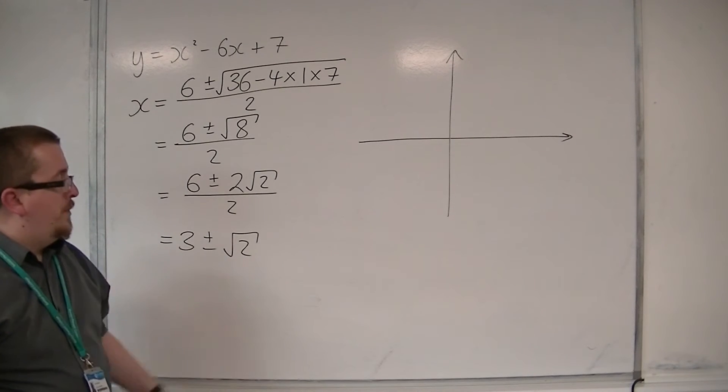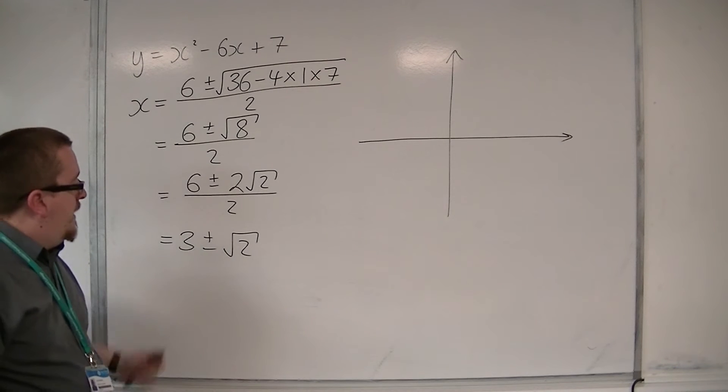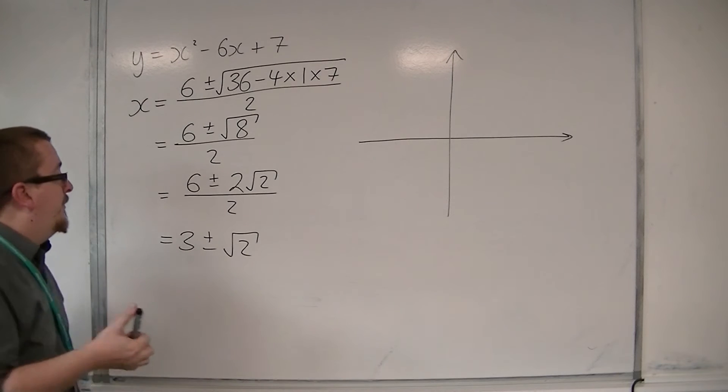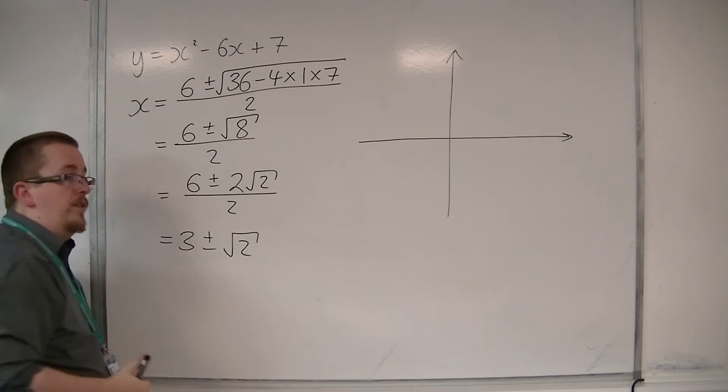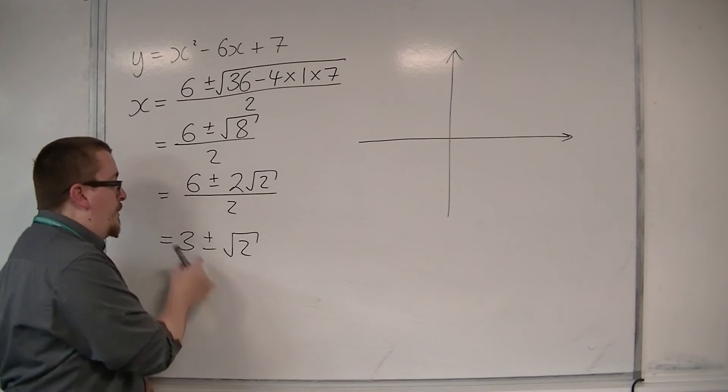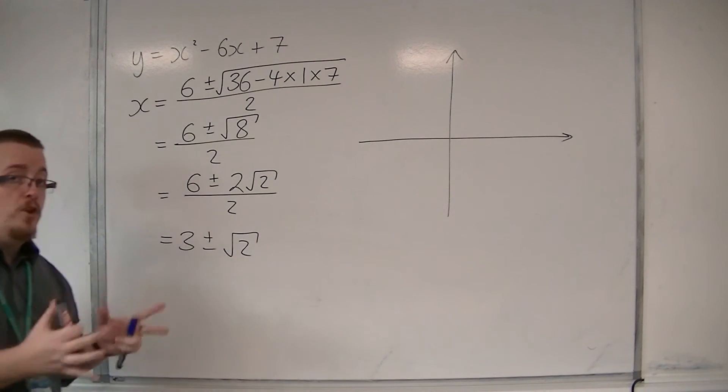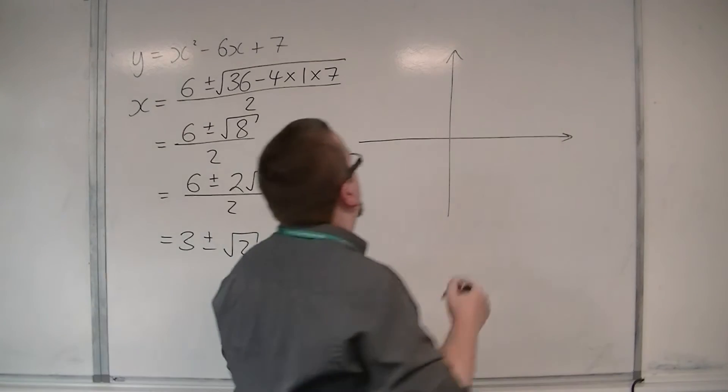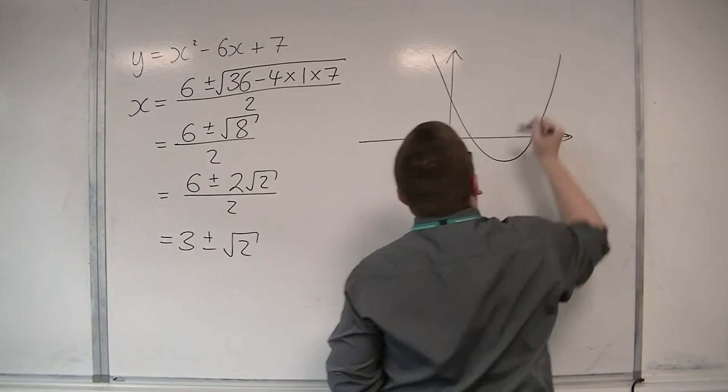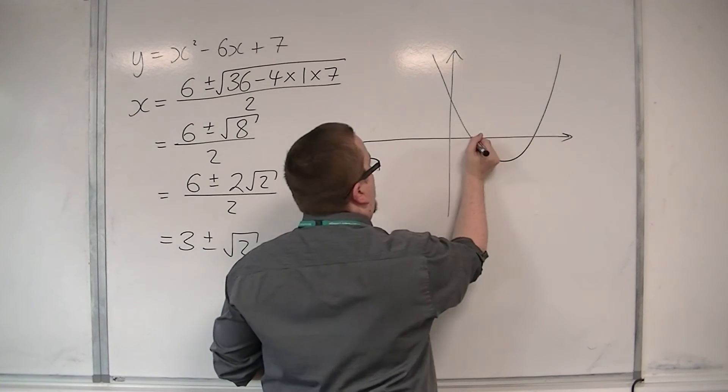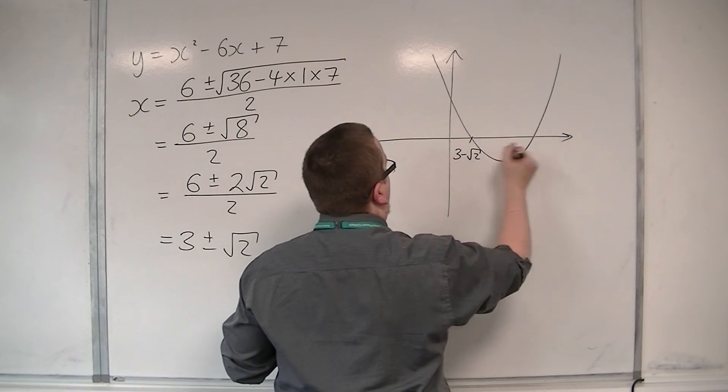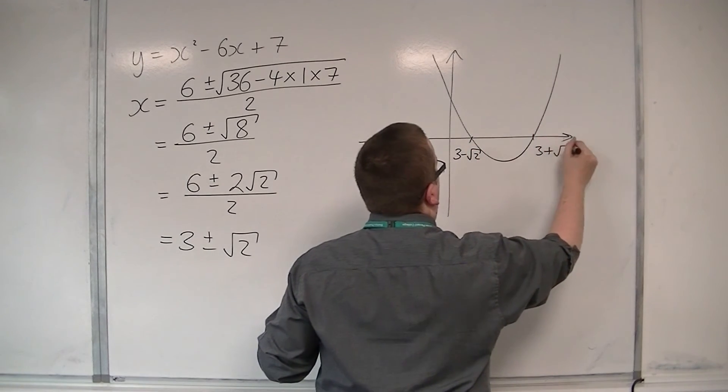So 3 plus root 2 is definitely positive. Is 3 minus root 2 negative? In other words, is the square root of 2 larger than 3? Well, it's not. So the square root of 2 is smaller than 3, so 3 take away root 2 should still be positive. So the curve must go through the x-axis at 2 positive points, 3 minus root 2 and 3 plus root 2.